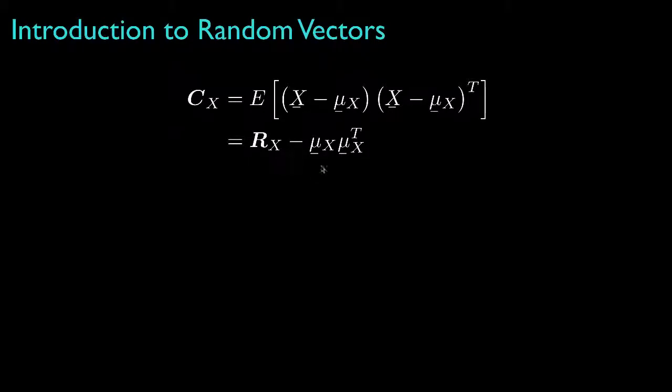Like the correlation matrix, the covariance matrix must be symmetric and non-negative definite. In subsequent lessons, we'll review some of the important ways that we use second moment descriptions, such as the covariance and the correlation matrices for random vectors.